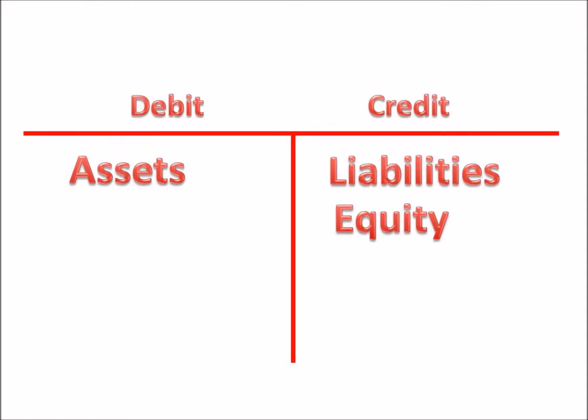If we increase liabilities or equity accounts, we credit them. Likewise, if we decrease these accounts, we do the opposite, so we debit them. Liabilities and equity will normally have a credit balance.